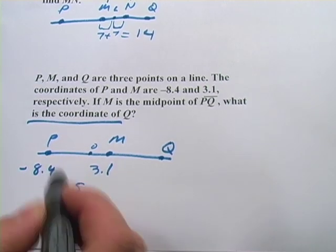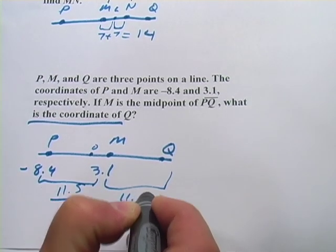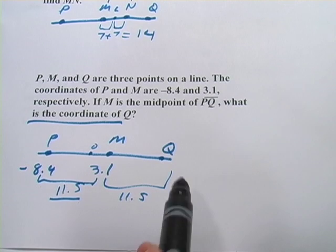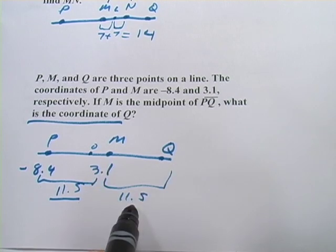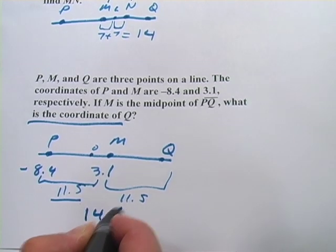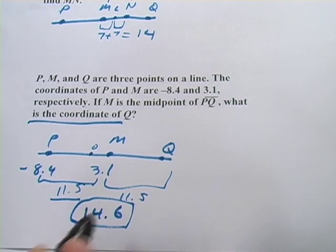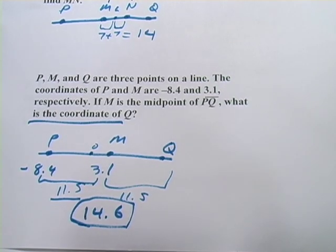So we know that this distance right here is 11.5. So this distance is going to be 11.5 as well. And then to find the coordinate of Q, since we're starting at 3.1 and we're adding 11.5 to that, we just have to add those two together. And we get 14.6 for our coordinate for Q. So that's a little bit of work with midpoints.